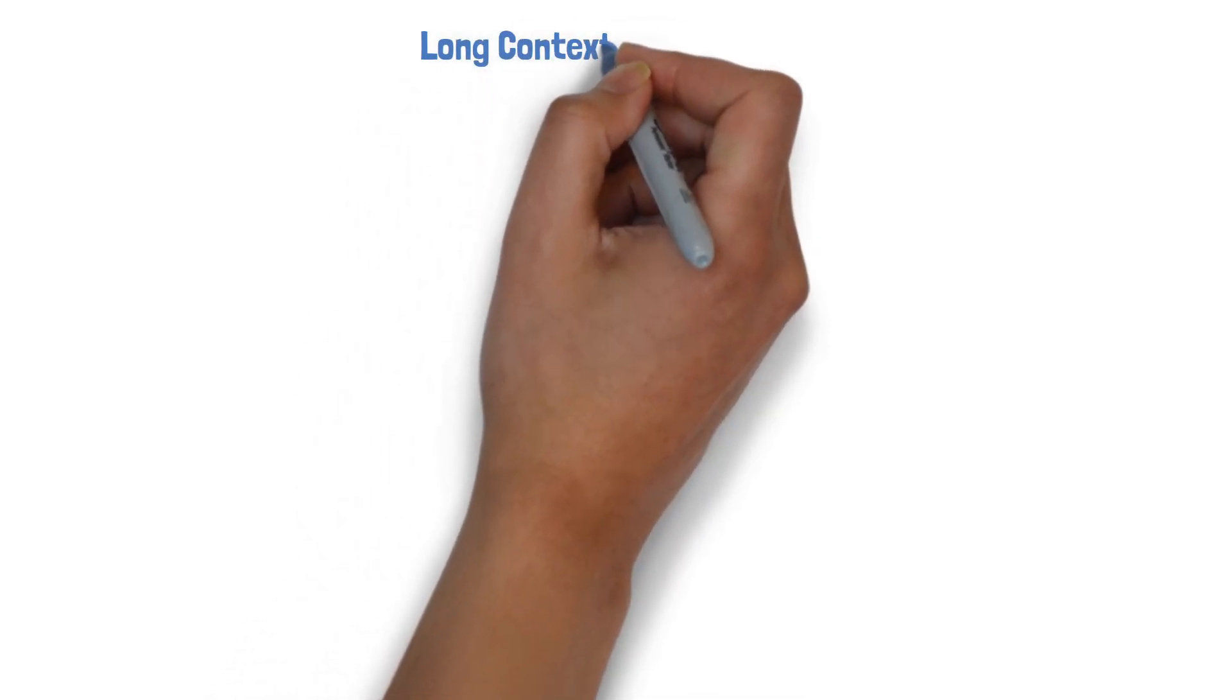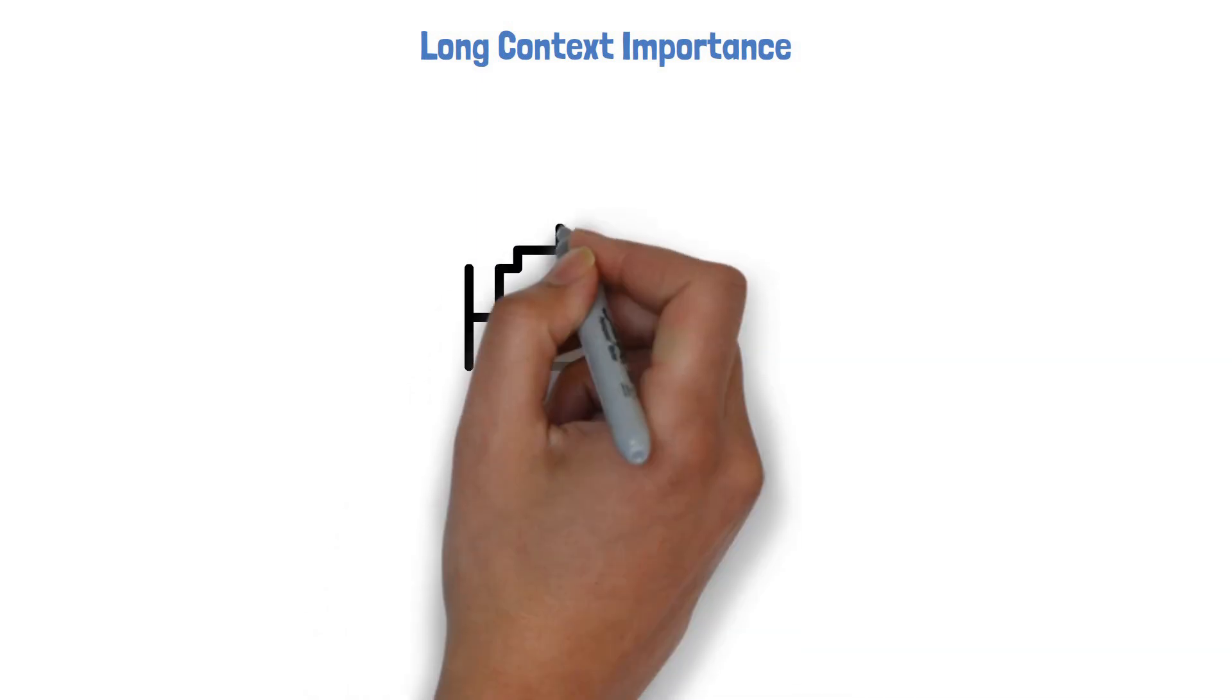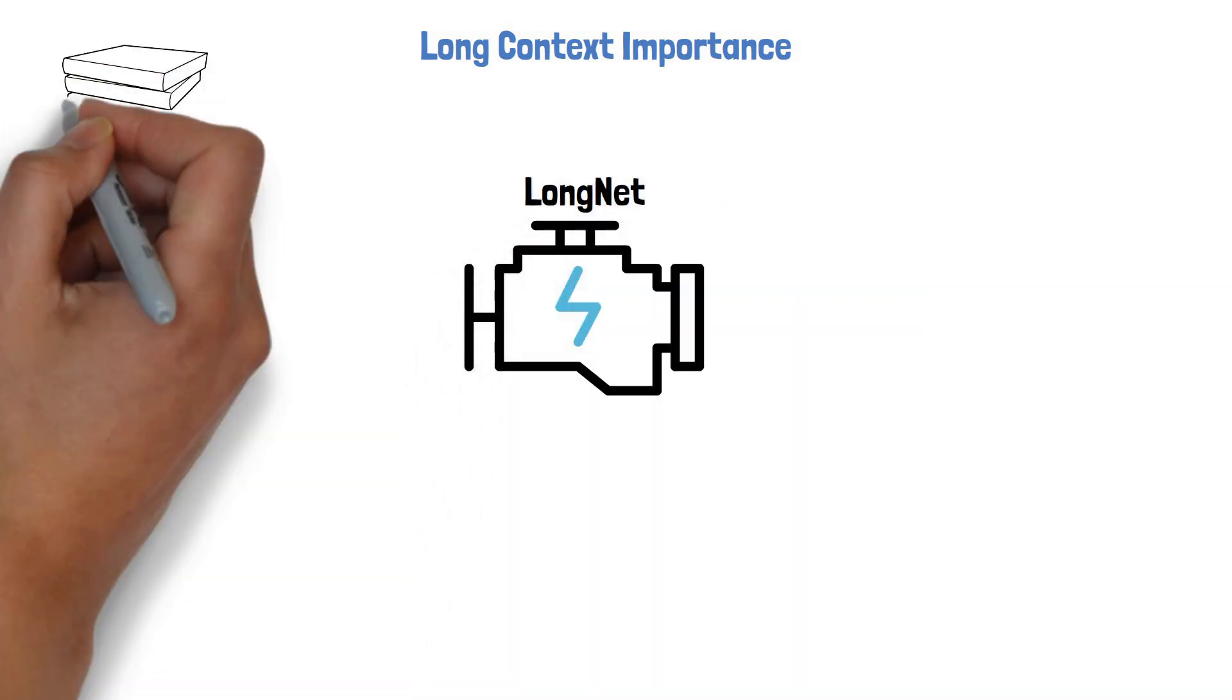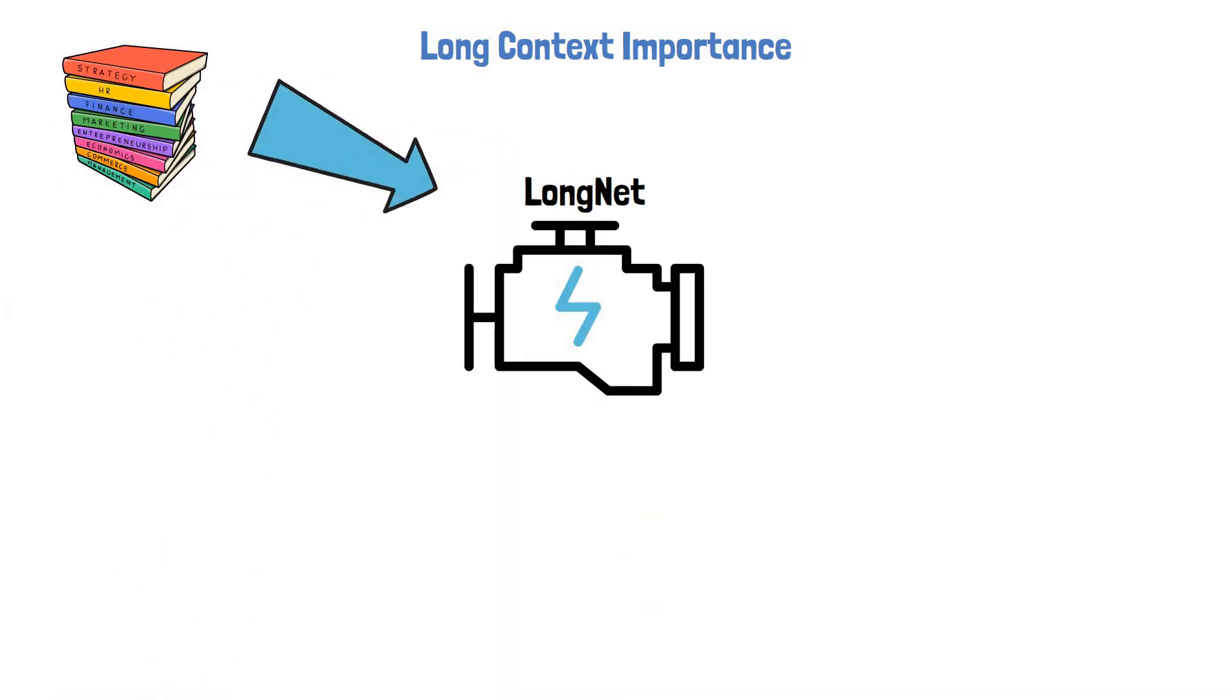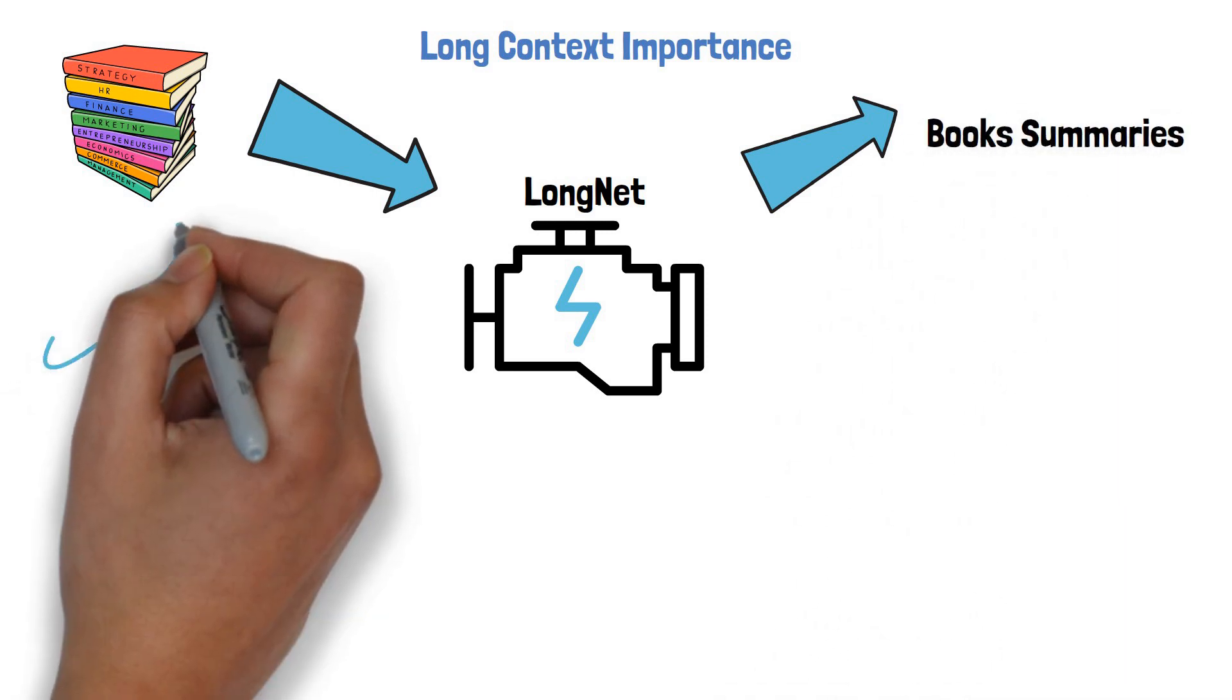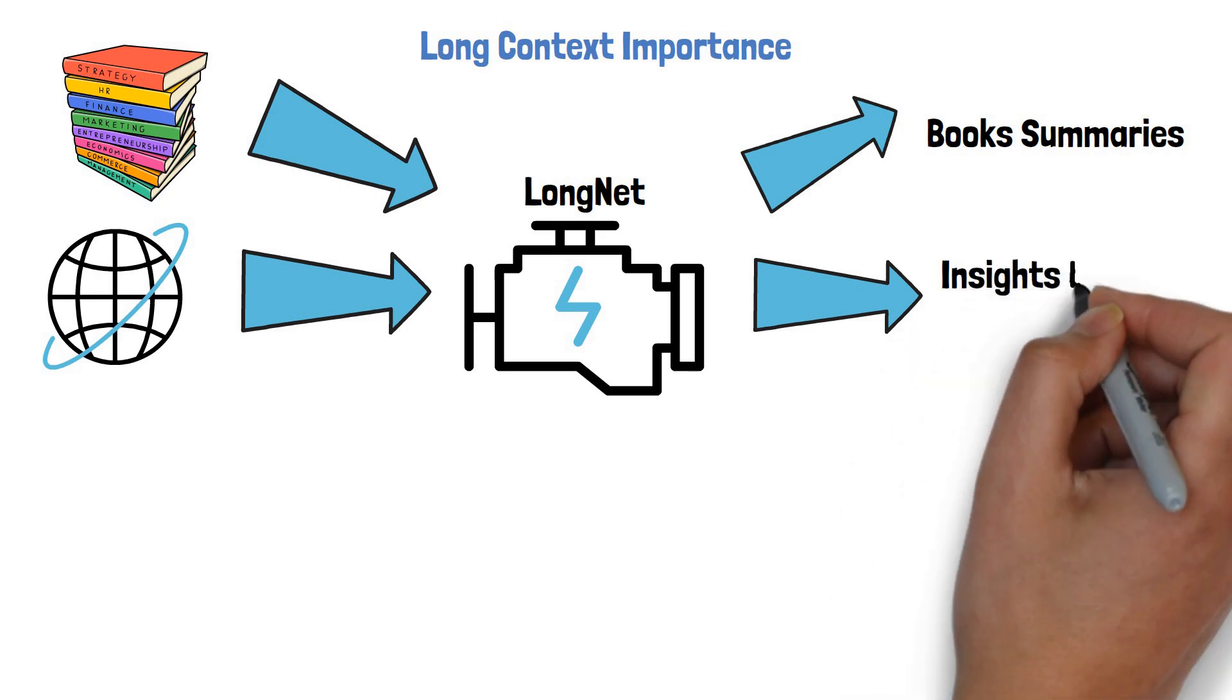Let's start with the importance of long context. Modeling long sequences has become a critical demand in the era of large language models, and there are many reasons for that. As an example of why it is important, say we have a LongNet model that can process a huge input sequence. Then we can feed it with books as inputs or a stack of books on the same topic and get a summary on a topic that takes into account many different information sources at once. Another intriguing example is being able to provide the entire internet as a sequence and have the model provide insights with this context.